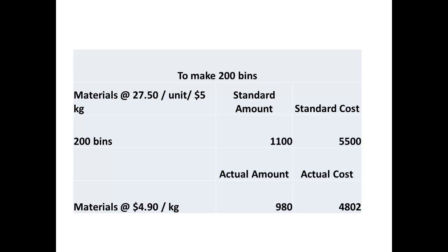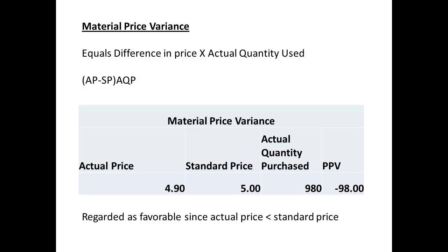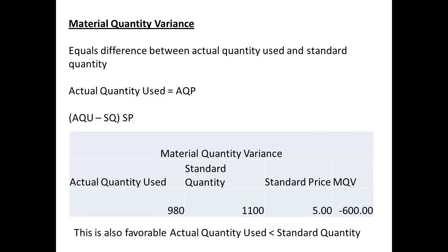Let us look at figures for the production of 200 bins. The standard cost indicates this would take 1,100 kilos of materials, which would cost $5,500. The actual amount used was 980 kilos purchased for $4,802. The material price variance is the actual price less the standard price, multiplied by the actual quantity used, giving a figure of negative $98. A negative figure indicates a favourable result, since it reflects that the actual price was less than the standard price. The material quantity variance is the actual quantity used less the standard quantity, multiplied by the standard price, resulting in negative $600. This is also favourable, since the actual quantity used was less than the standard quantity.